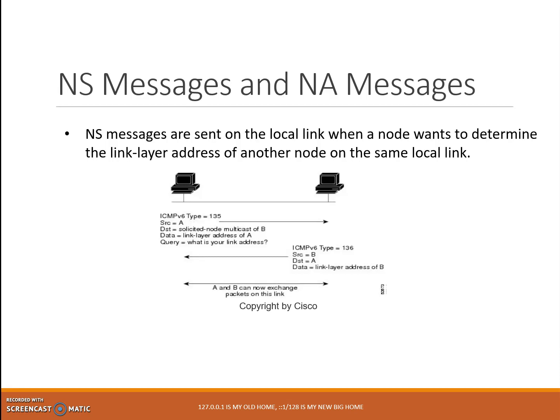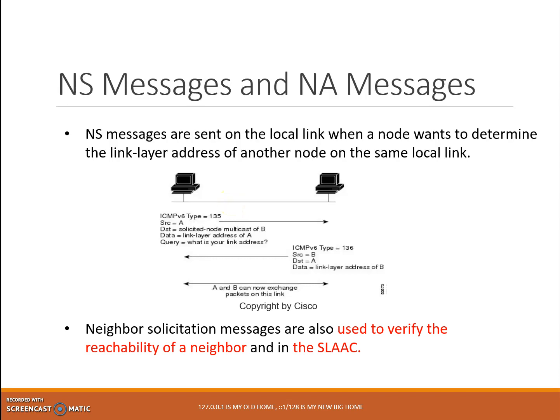The data portion of the NA message includes the MAC address — the link layer address — of the node sending the NA message, which is Node B. So the request for the link layer address is sent by Node A using an NS message, and the reply with the link address is sent by Node B using an NA message. This is the first use of NS and NA messages.